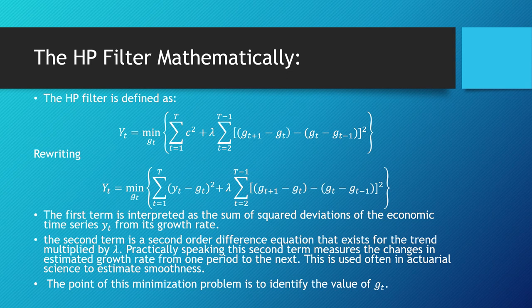Practically speaking, the second term measures the changes in estimated growth rate from one period to the next. This is used often in actuarial sciences as an estimate of smoothness. The point of this minimization problem is to identify the value of g_t.